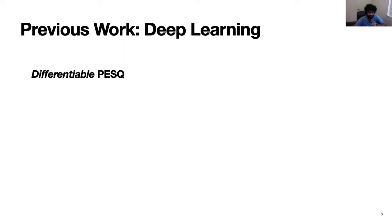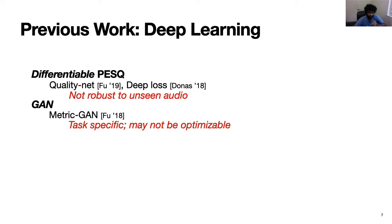So to address the non-differentiability aspect, researchers looked at a differentiable PESQ, like the two works of QualityNet and DeepLoss. These metrics were approximations of PESQ and so are not robust to unseen audio and unseen audio perturbations. Researchers have also explored GANs as a similarity metric, like the work of MetricGAN by Fu et al. in 2018. These approaches are too task-specific and may not be easily optimizable always.